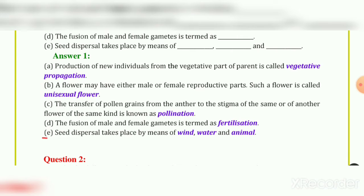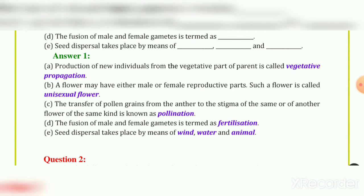E. Seed dispersal takes place by means of wind, water, and animals. So the answer for the three blanks is wind, water, and animals.